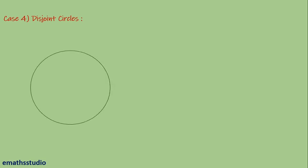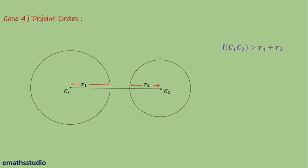The next point is about disjoint circles. When two circles are not intersecting, not meeting, and not touching each other, those circles are called disjoint circles — they don't have any point common between them. C1 and C2 are the centers of two circles, and R1 and R2 are their radii. The condition for disjoint circles is: length C1C2 is greater than R1 plus R2.